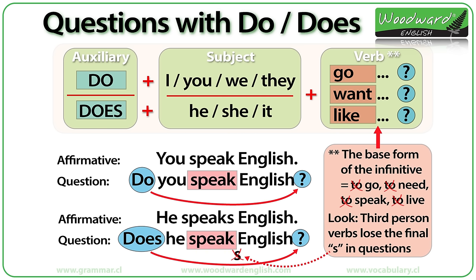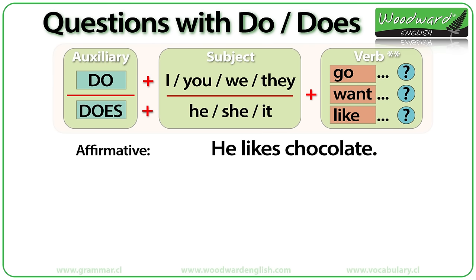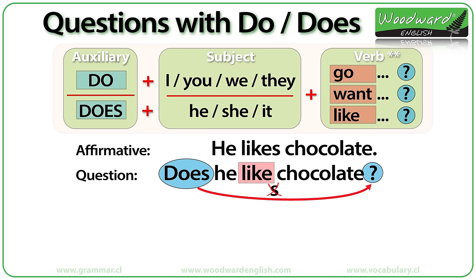Third person verbs lose the final S in questions. For example: He likes chocolate. How can we change this to make a question? We need DOES because it is a question and it refers to HE. We use LIKE because the infinitive is TO LIKE and we remove the TO part. Does he like chocolate?